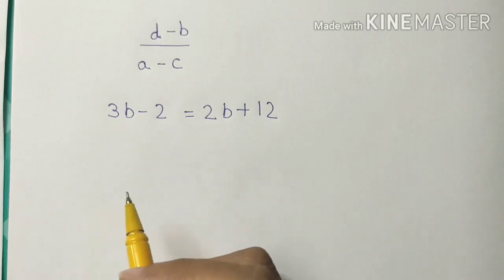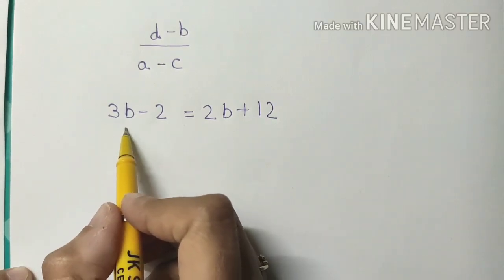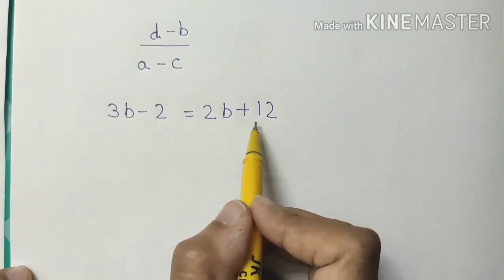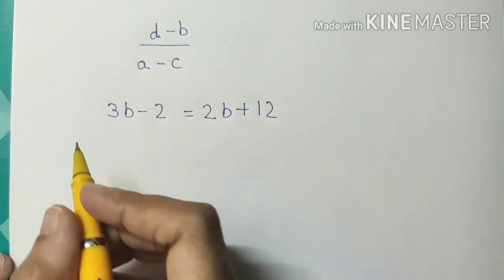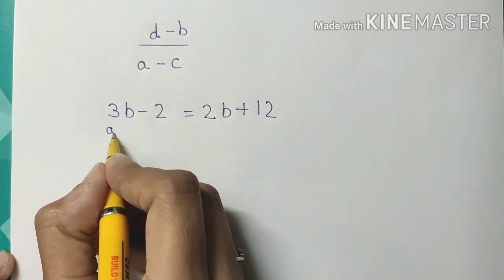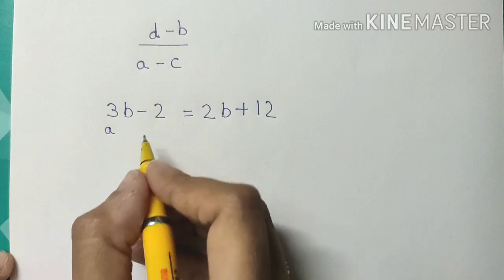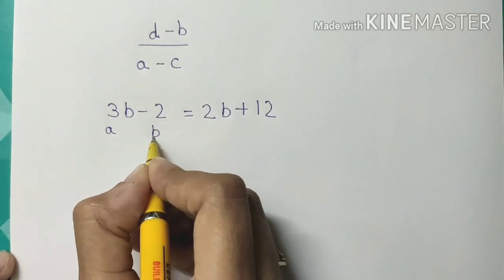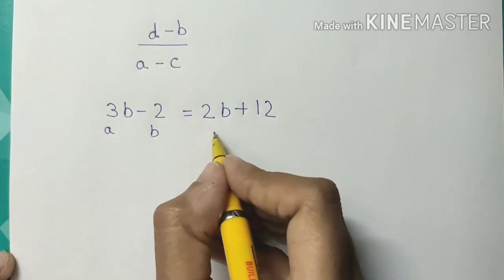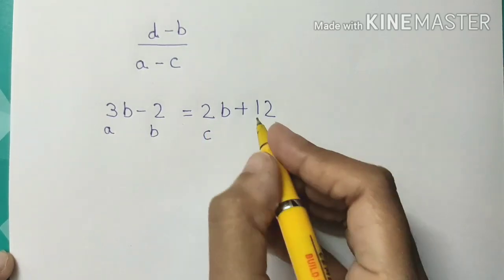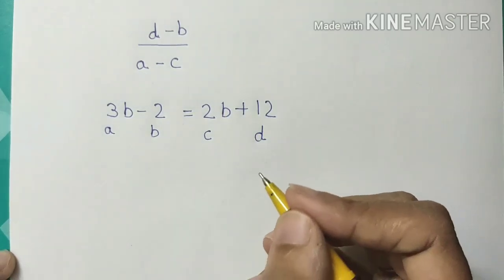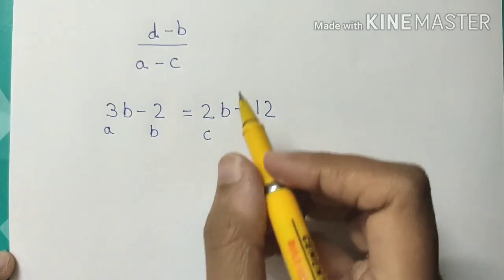Our next example is 3B minus 2 = 2B + 12. Now mark A, B, C, and D. A is 3, B is minus 2, and C is 2.